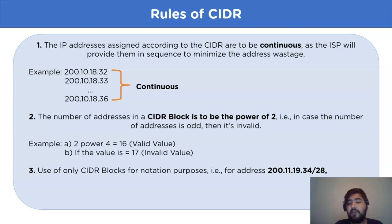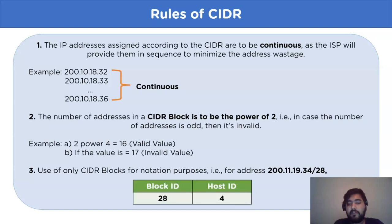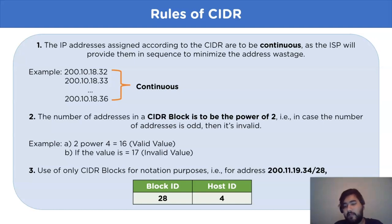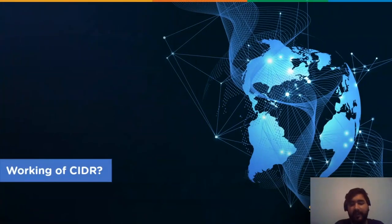For the last rule, we have the use of the CIDR block for notation purposes. For example, if we have 200.11.19.34/28 as an IP address, then the block ID is 28 and the host ID is 4, which is calculated using 32 minus 28, because in an IPv4 address 32 bits is the maximum limit.